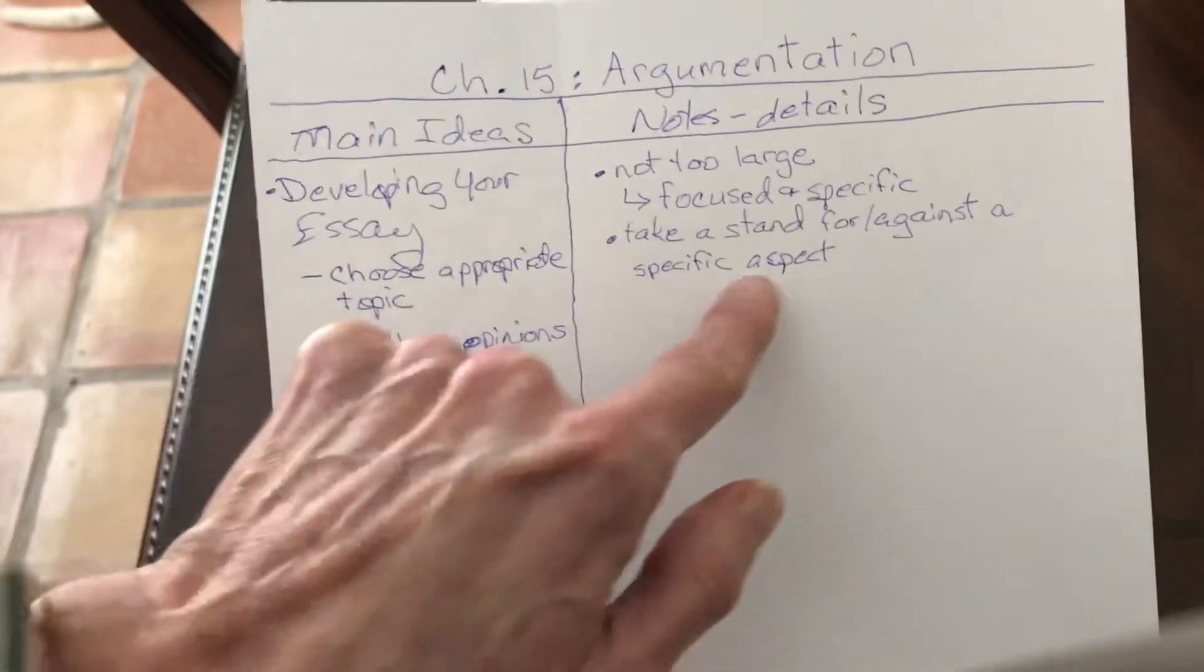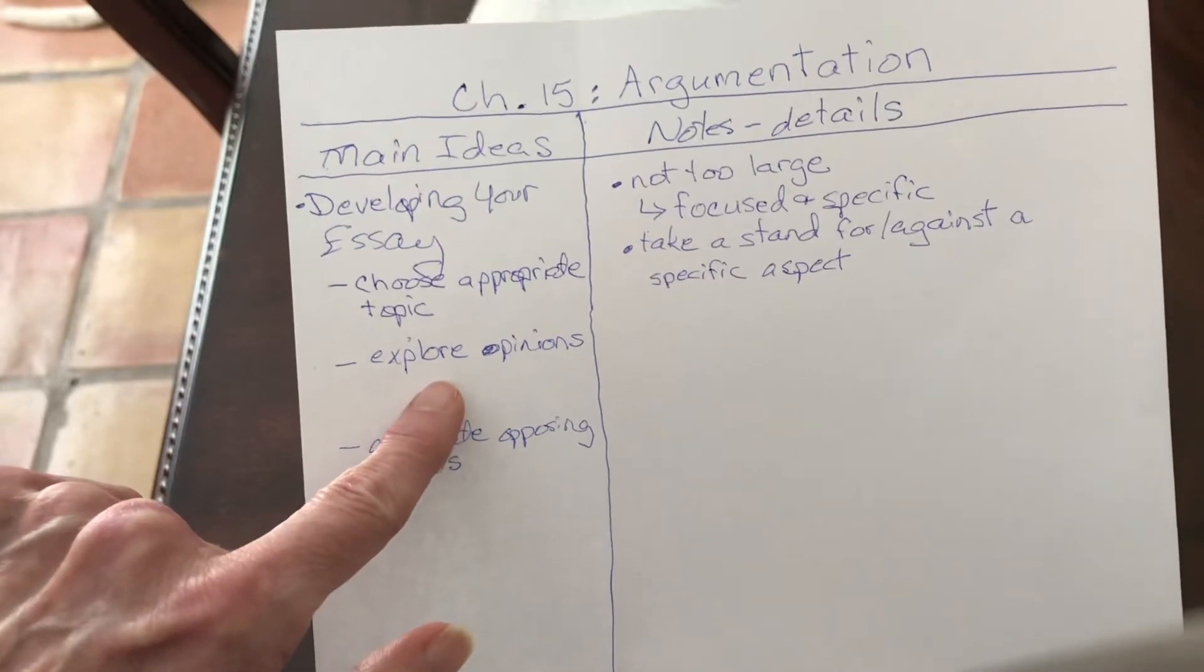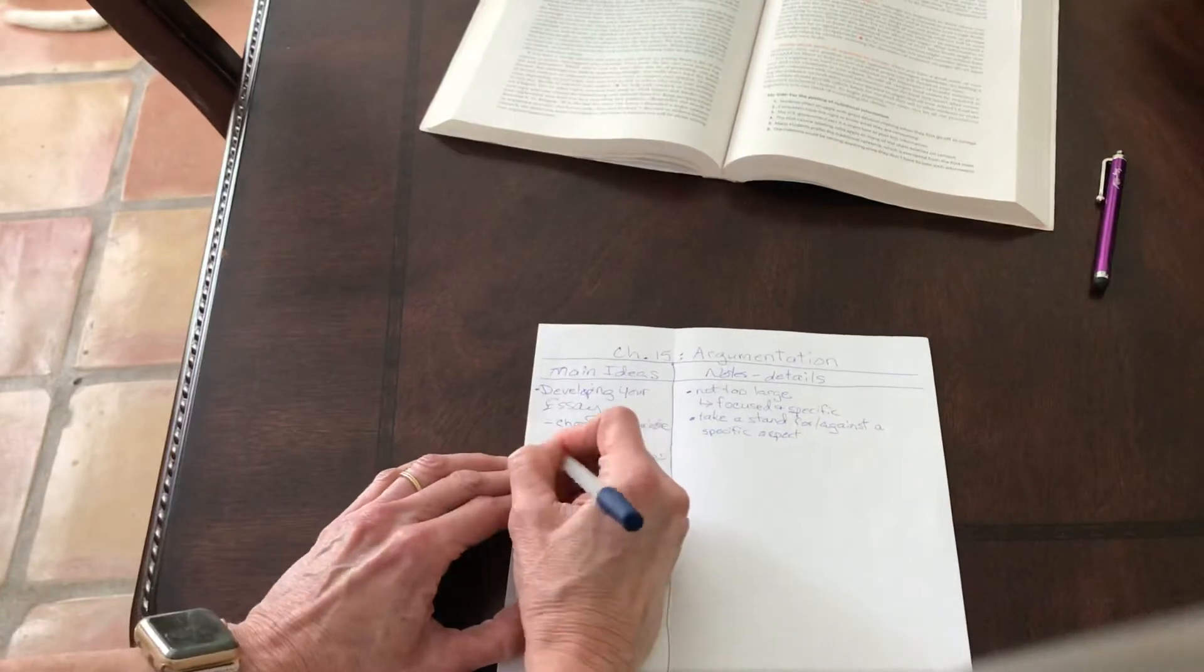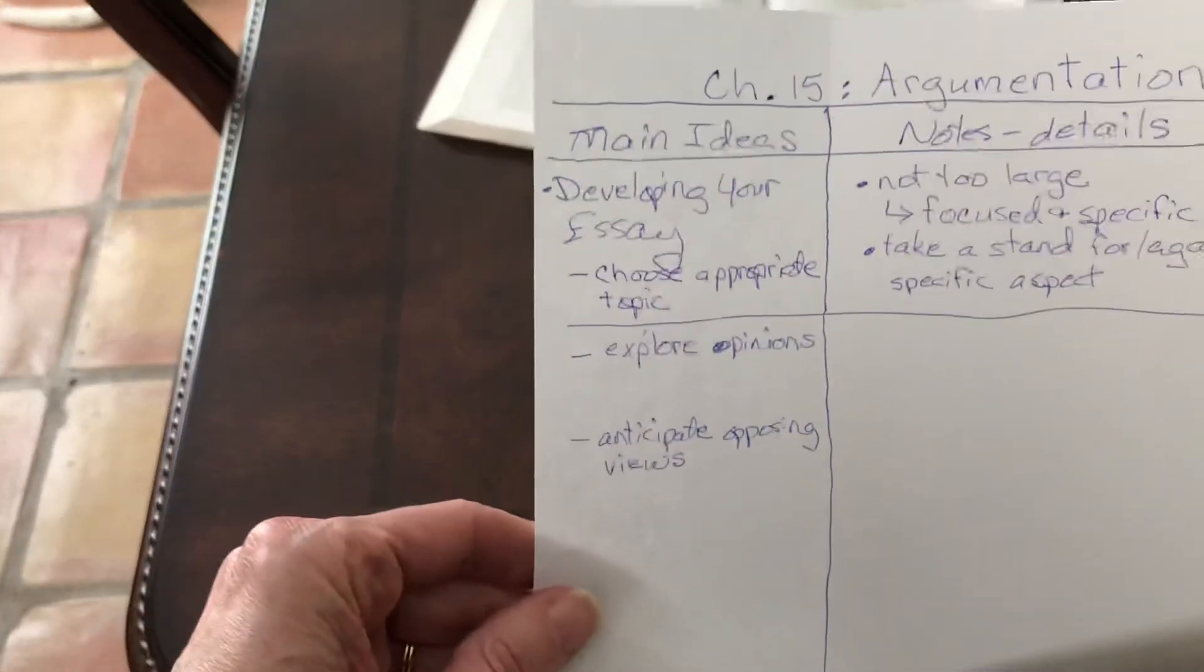Now I also need to separate these details from the details on exploring the opinions, and that's easy to do just by drawing a line. No big deal.